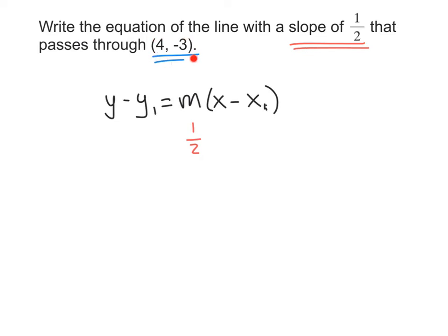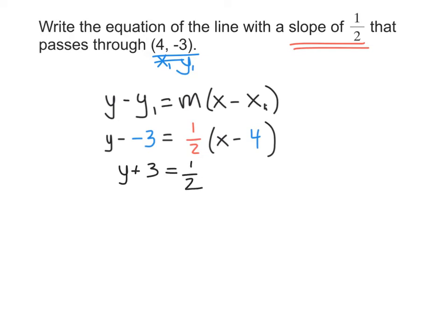We need to put the 4 and the negative 3 in where they go. Remember that this is x and this is y, and we're going to use x1 and y1 — that little subscript 1 means this is one example of a point on the line. So we put 4 in for x1 and negative 3 in for y1. We write y minus negative 3 equals 1 half times x minus 4. I recommend simplifying that to y plus 3 equals 1 half times x minus 4.